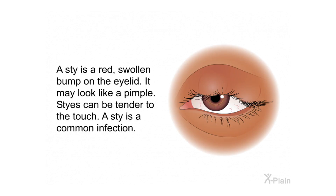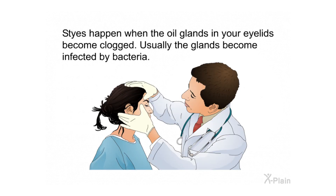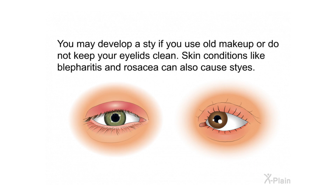In summary: a stye is a red swollen bump on the eyelid that may look like a pimple. Styes can be tender to the touch and are a common infection. Styes happen when the oil glands in your eyelids become clogged and infected by bacteria. You may develop a stye if you use old makeup or do not keep your eyelids clean. Skin conditions like blepharitis and rosacea can also cause styes.